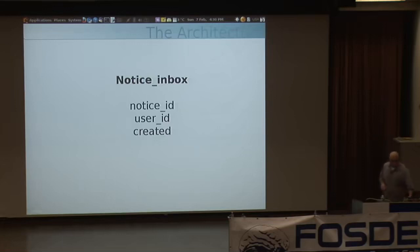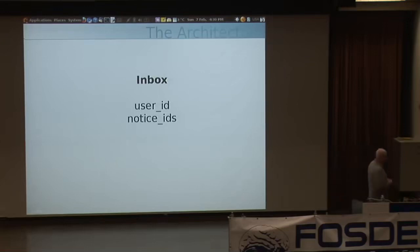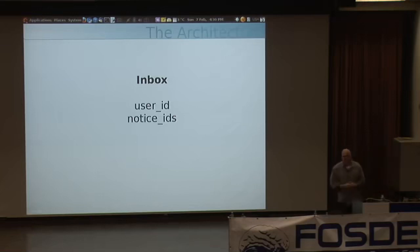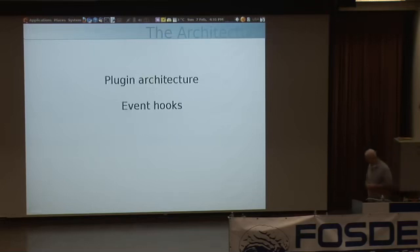We instead moved to a denormalized system that keeps a great big blob of packed notice IDs. Each user has a big blob of packed notice IDs. This is the system we currently use — it is very fast. We can update it atomically using some tricky syntax that works pretty well on both MySQL and PostgreSQL. It's really, really fast.